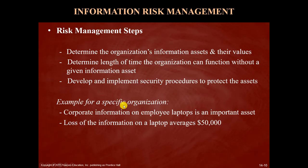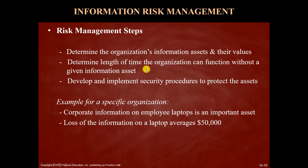One of the main goals of a chief security officer is to manage risk. A rough list of risk management steps includes: first, determine the organization's information assets and their value — typically financial value, though some organizations think in terms of how long the organization can function without a given asset. Once you know the assets and their value, you can prioritize how important those assets are, and then develop and implement security procedures that are proportional to the priority and value assigned to those information assets.